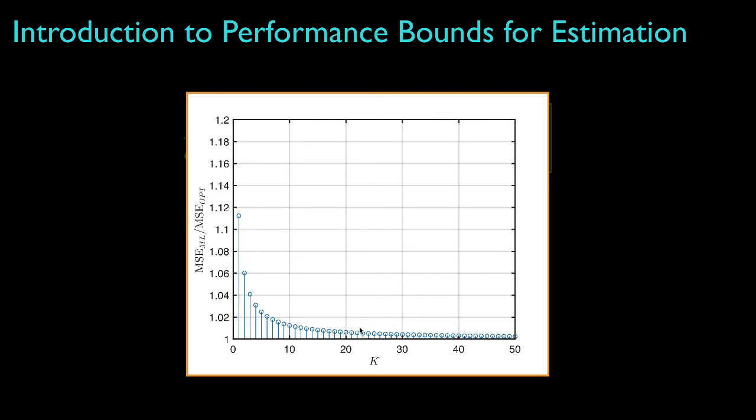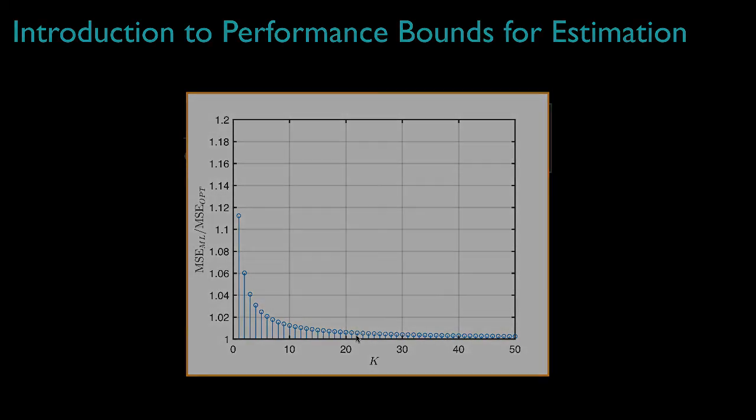Of course, we could try any other estimators that are significantly different from the maximum likelihood estimator and see if their mean square error is even lower still. Before doing that, though, it would be nice and helpful if we could identify a lower bound for the mean square error. Then, if an estimator attains that bound, we'd know that no other estimator could be better. With this in mind, we'll address lower bounds for the mean square error for both random and non-random parameters in subsequent lessons.